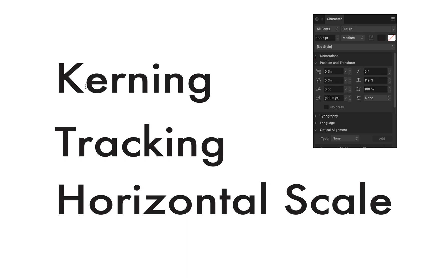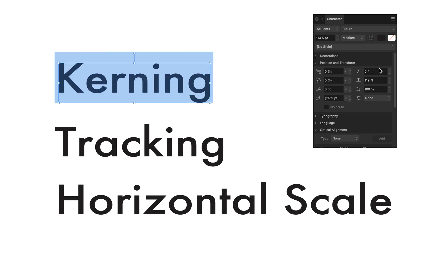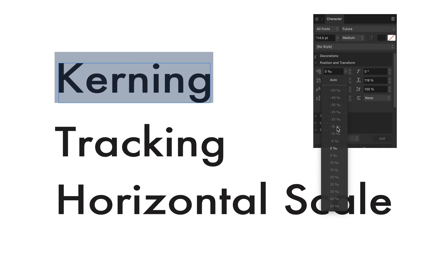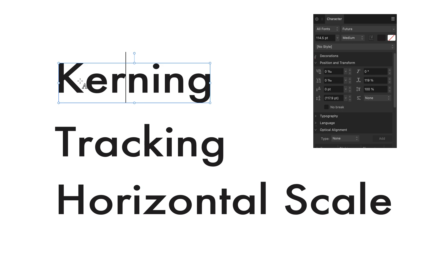Let's start with kerning. Kerning is the difference between two individual characters and only two. You cannot set the kerning for an entire word. As you see here, there's only zero percent and auto — kerning only applies to the distance between two individual characters.